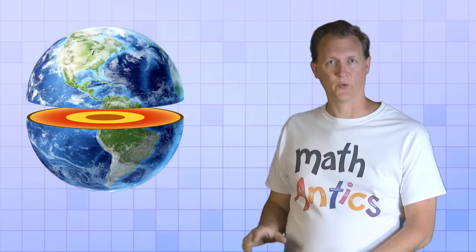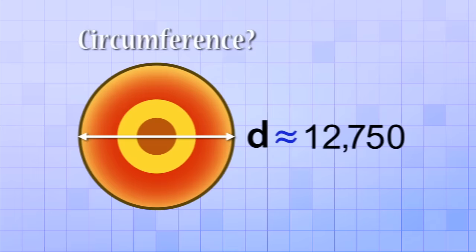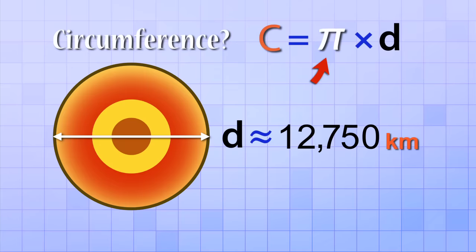Alright, let's try a couple real-world examples to make sure you've got it. Here's the real world, which as you probably know is a sphere. But if we take a slice of the world right at the equator, that slice is a circle. Let's find the circumference of that circle. To do that, we need to know the diameter of the Earth. That turns out to be about 12,750 kilometers. Great! Then to find the circumference, we just need to multiply that diameter times Pi.